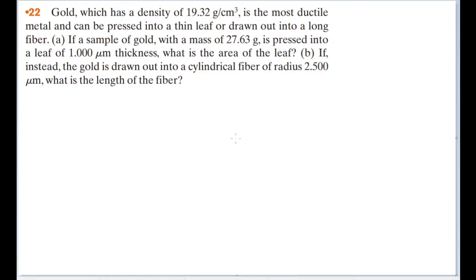Gold, which has a density of 19.32 grams per cubic centimeter, is the most ductile metal and can be pressed into a thin leaf or drawn out into a long fiber. If a sample of gold with a mass of 27.63 grams is pressed into a leaf of 1.000 microns thickness, what is the area of the leaf?